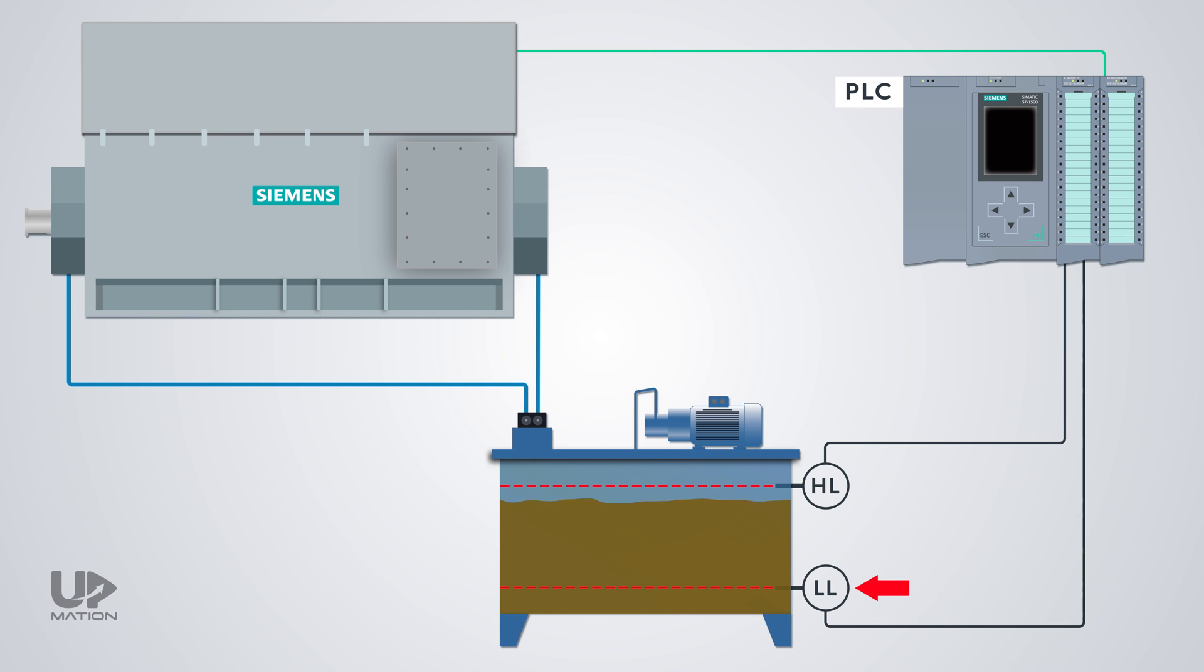Let's assume that the low level switch of the tank is a normally closed switch. So that when the oil reaches below this switch, due to leakage for example, this switch is supposed to send a true signal or a 24V DC signal to the PLC. And as a result, the PLC turns off the electric motor.